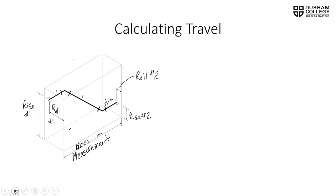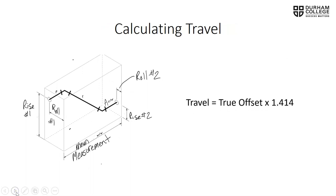To calculate the travel — our T piece of pipe from center to center of fitting — we take our true offset, which we just calculated, and because we know it's a 45-degree rolling offset, we multiply it by 1.414.